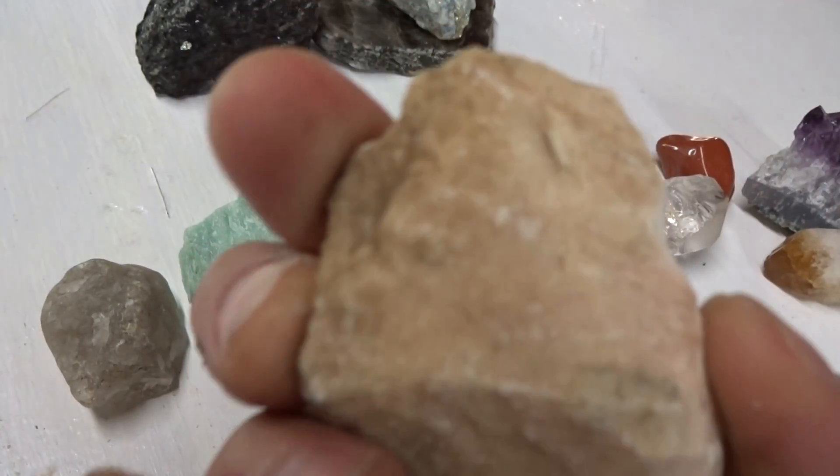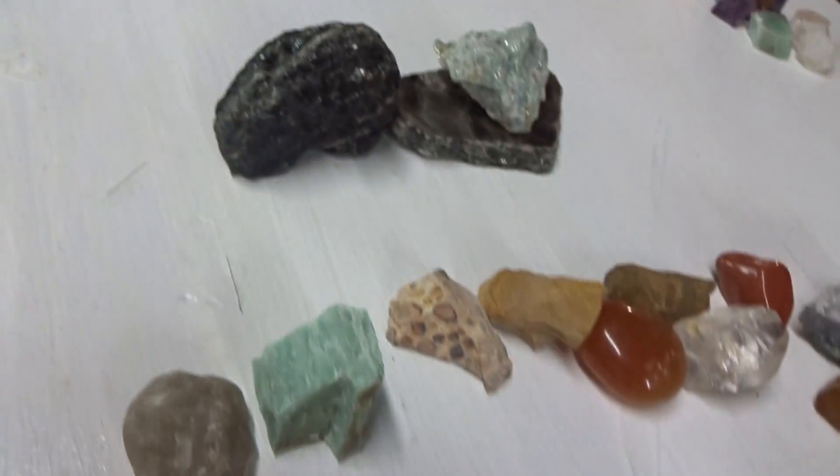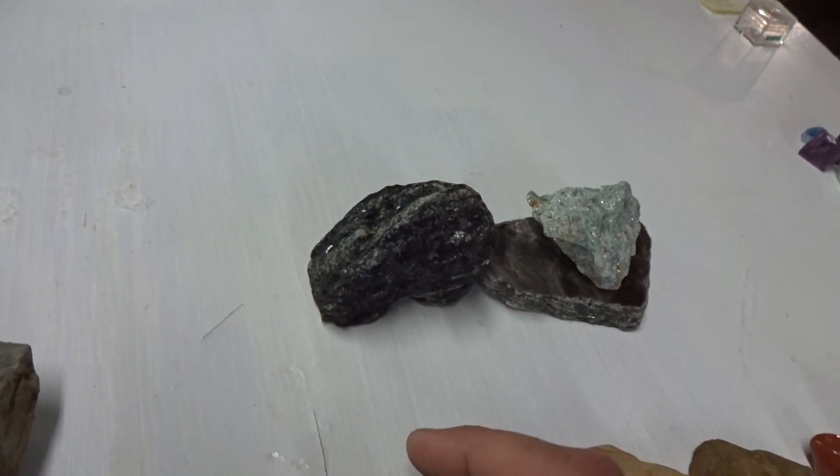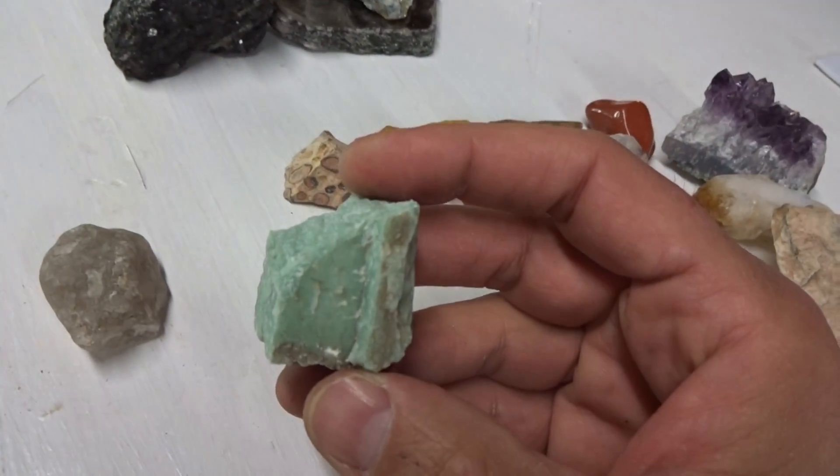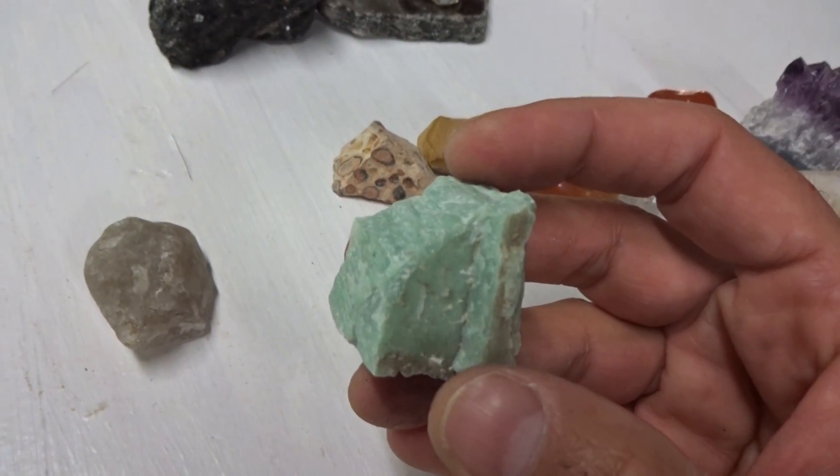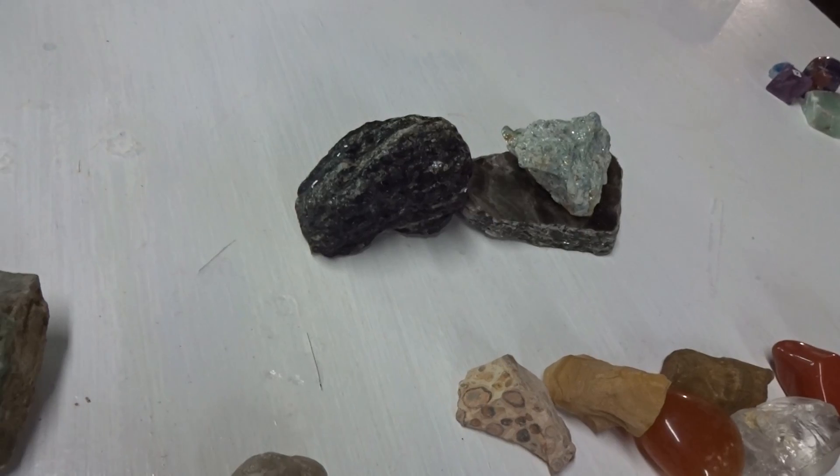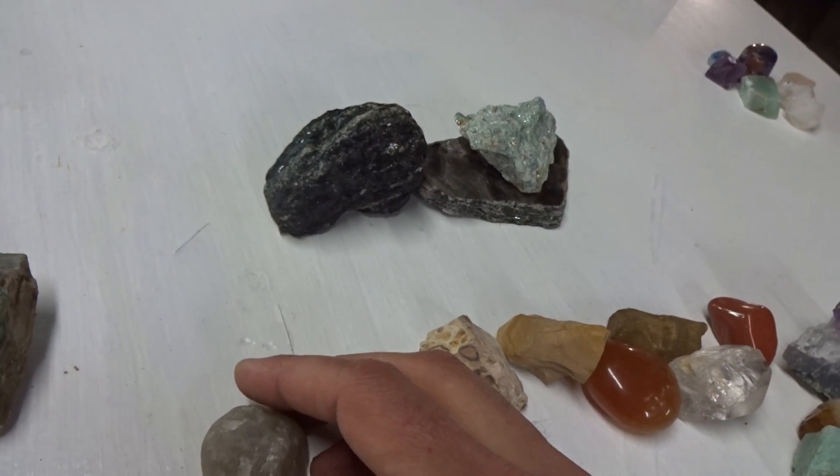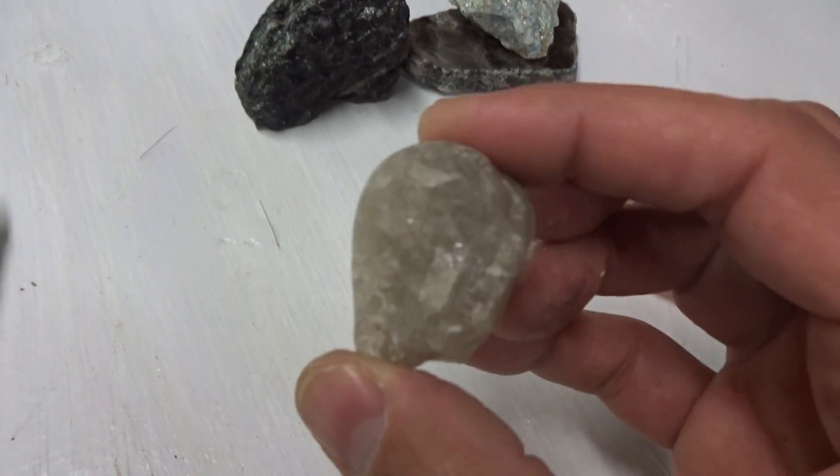This is red aventurine. I don't know what makes it red. I couldn't find out. This is green aventurine. Green aventurine comes from iron. Iron gives different colors.